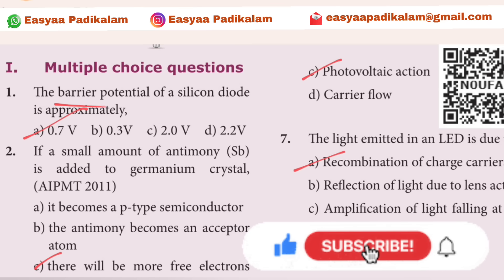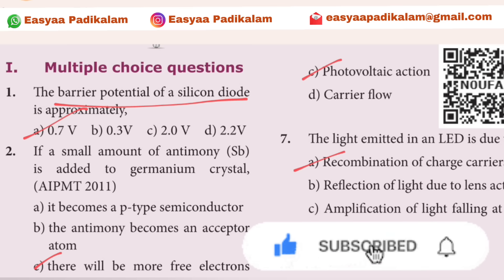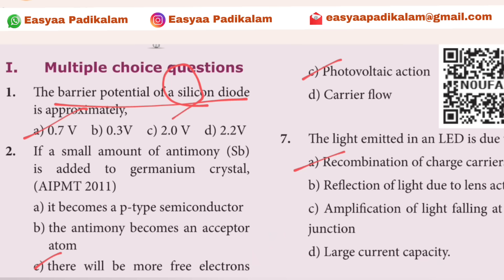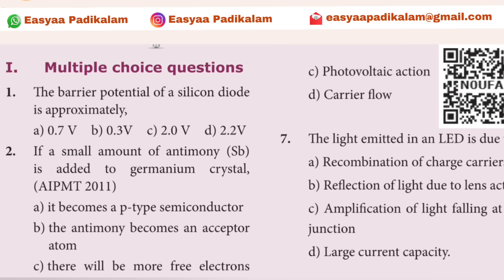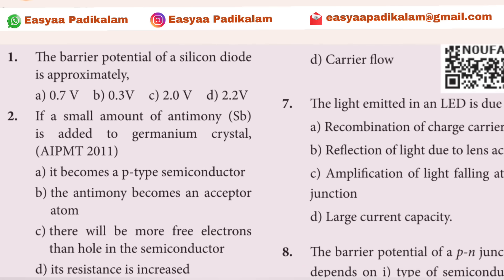First question: the barrier potential of silicon diodes. Silicon is 0.7. So, the answer is silicon — 0.7 volts. Everyone should know this.